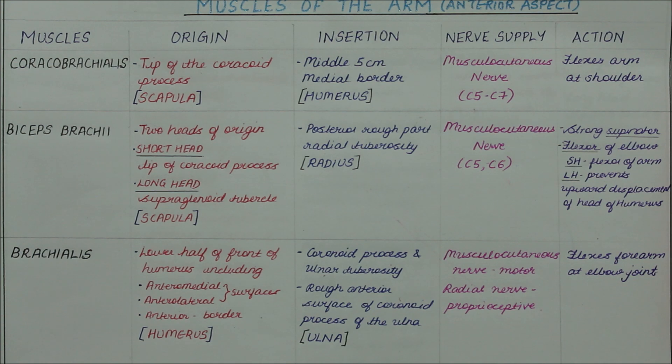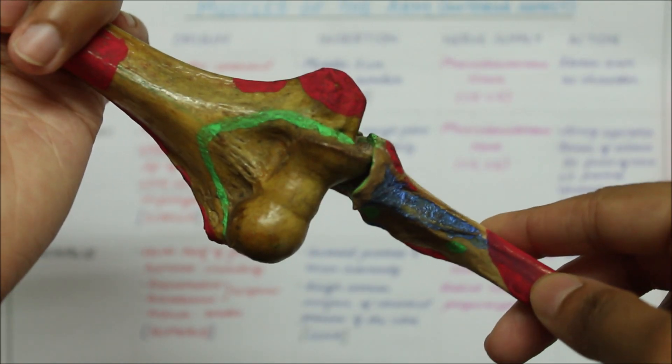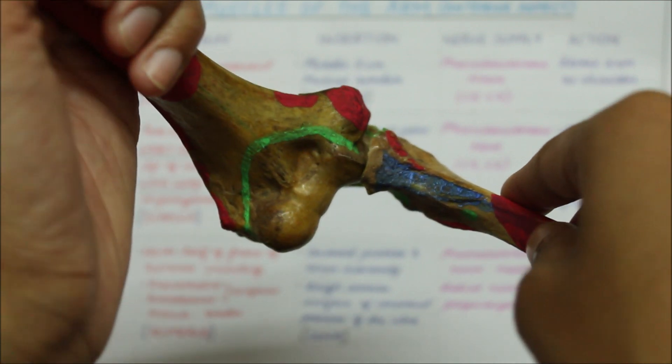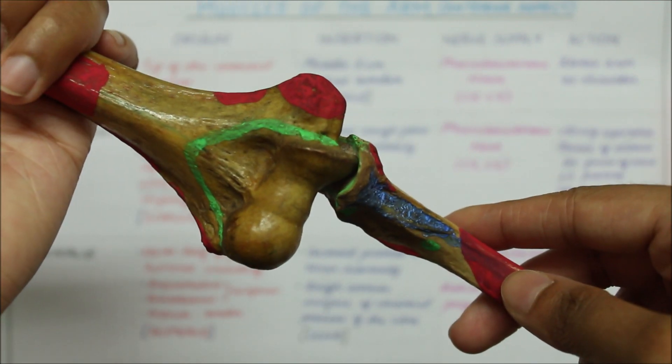The action of the brachialis is that it flexes the forearm at the elbow joint.